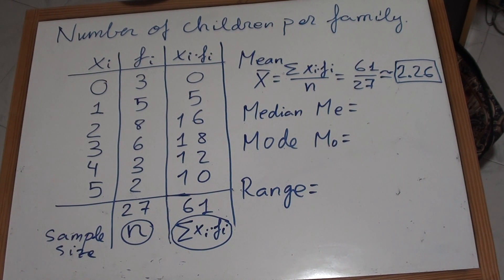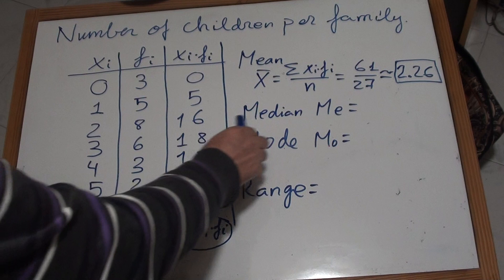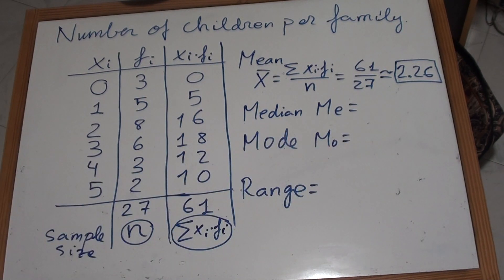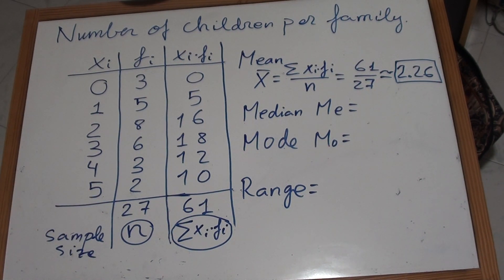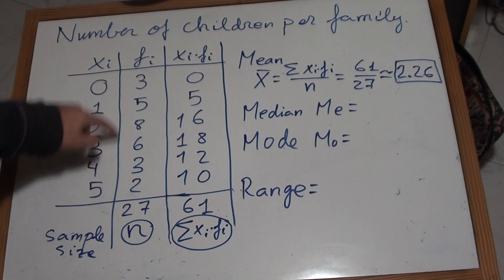The median is the data in the middle of the distribution. So if we have here 27 data, in the middle of 27 we would have 14. The data in the 14th place would be in the middle of the distribution.